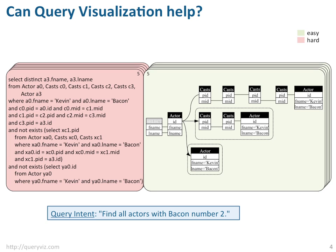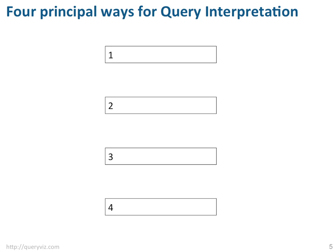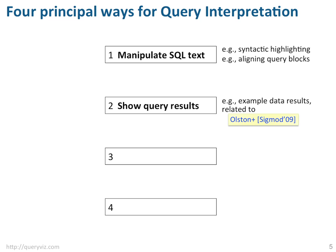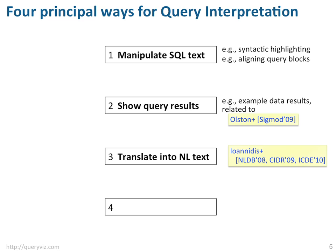Furthermore, it is actually the best option among several to help users quickly understand queries. There are four principal options to help users interpret an existing query. First, we can make SQL as readable as possible. Second, we can show query results — this is something proposed by Alston et al. to quickly illustrate the semantics of operators in a data flow program. Third, we can translate queries into natural language, currently pursued by Unidis et al. And fourth, we can visualize queries.